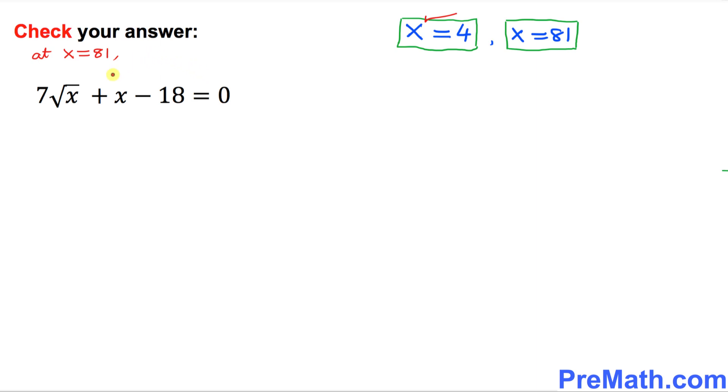Now we're going to check our answer at x equal to 81. Let's plug it in wherever you see x, replace it by 81. So that is going to simply give us 7 times square root of 81 plus 81 minus 18, question mark. Is the left hand side equal to right hand side? We know the square root of 81 is 9. So 7 times 9 plus 81 minus 18. So that's going to become 63 plus 81 minus 18. That means if you add or subtract, that is going to give you 126 and the right hand side is 0.